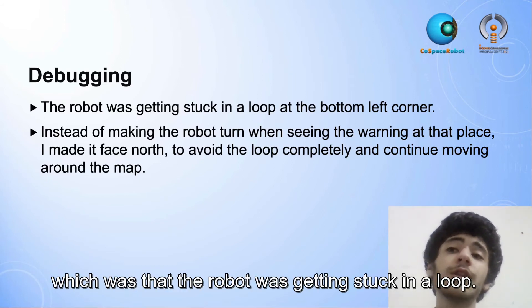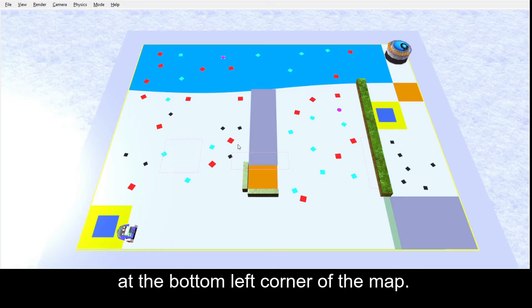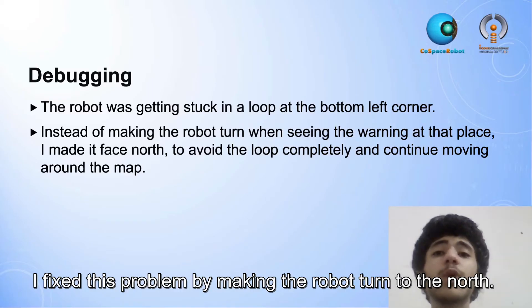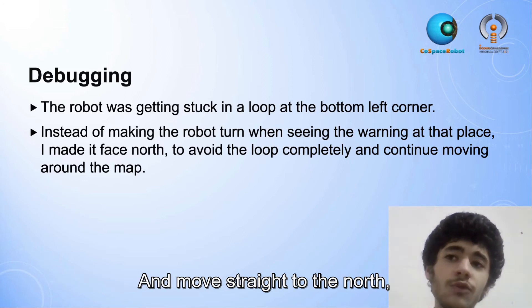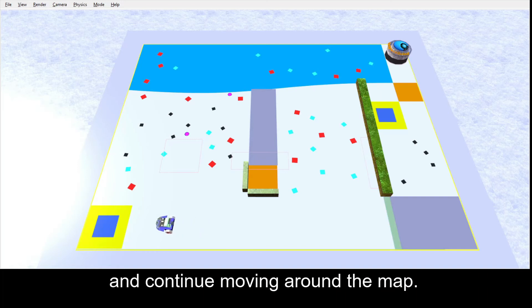I faced this problem while working on the challenge map, which was that the robot was getting stuck in a loop at the bottom left corner of the map. I fixed this problem by making the robot turn to the north and move straight to the north to avoid the problem completely and continue moving around the map.